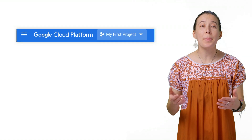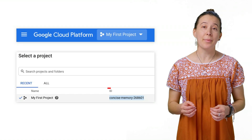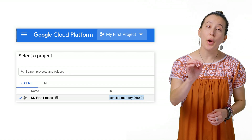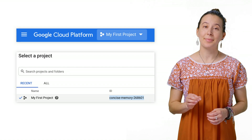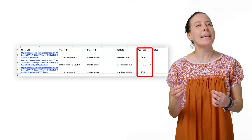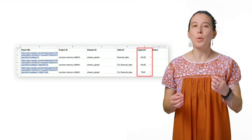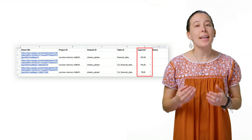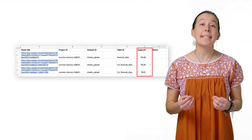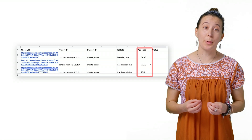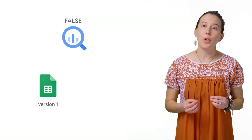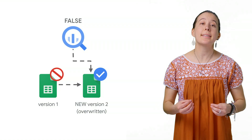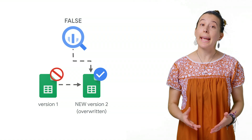Next, copy your BigQuery project ID and use it to replace the values in column B of the spreadsheet with your own project ID. Note that column E is called append, which has dropdown options of false or true. This tells the script that you are adding data to an existing table. Choosing false will tell the script to create a new table and will override an existing table with the same name.